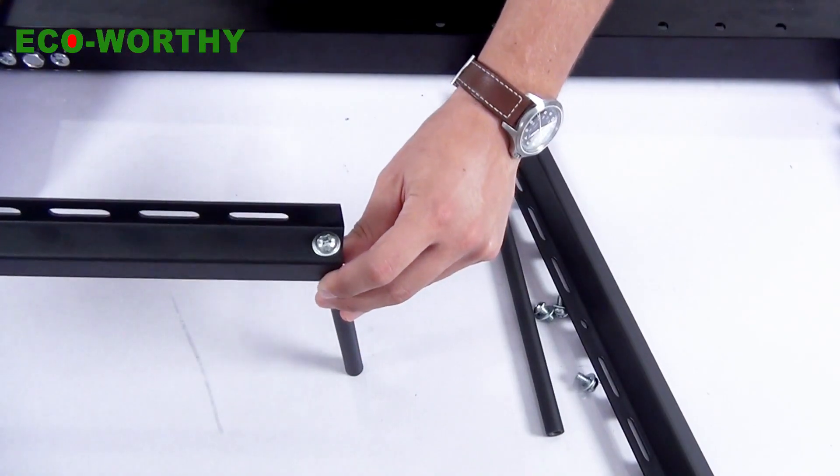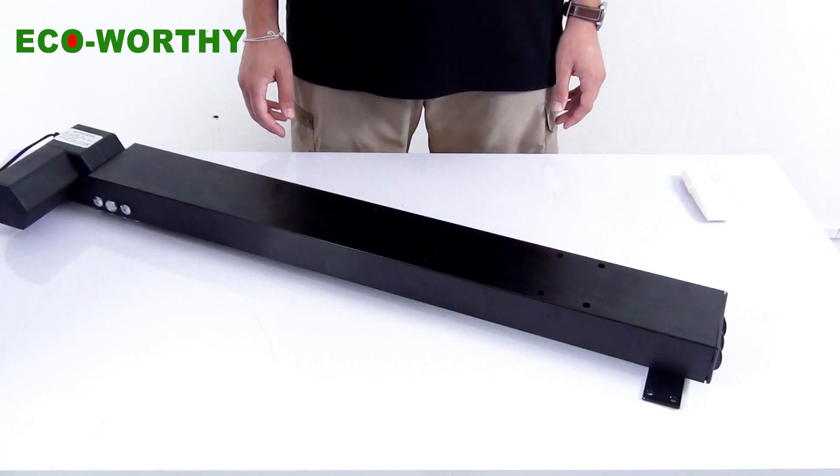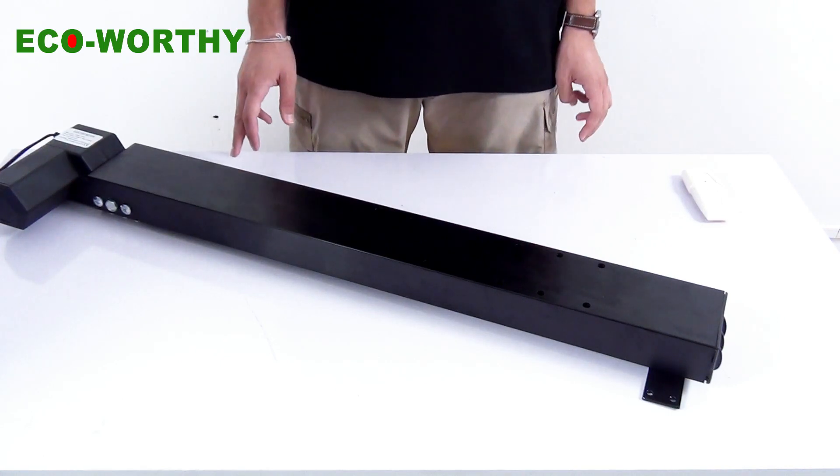Do the same job on both sides to get a rectangular bracket. And then we will fix this bracket to our main mount.